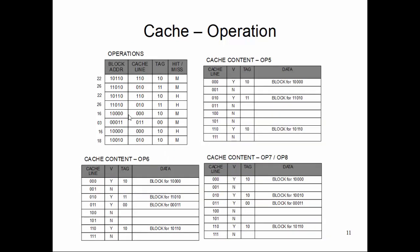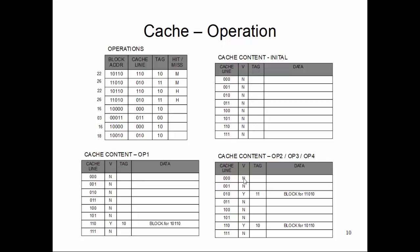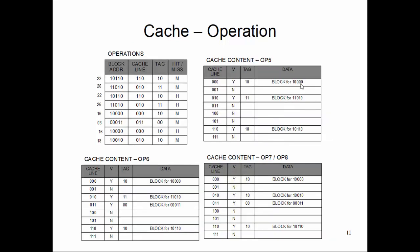For the next accesses: block address 10000 maps to cache line 000 with tag 10. That line was not valid, so it's a miss and the corresponding block is copied from main memory. The tag is updated to 10 and the valid bit is set to Y. The next block, 00011, maps to cache line 011, which is also not valid, so it's a miss. That block is copied from lower memory and the tag is updated to 00, with the valid bit set to Y.